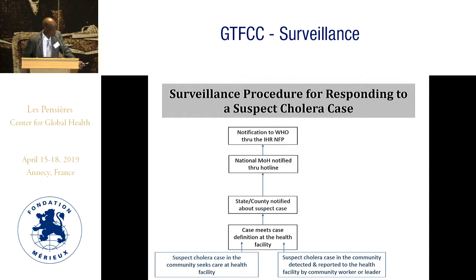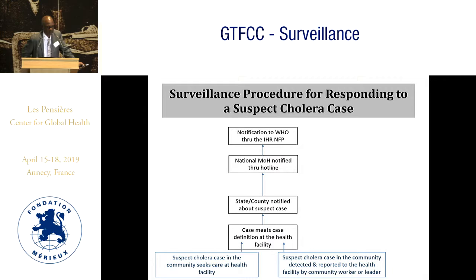There are other reporting pathways not shown for simplicity. Due to gaps in the system, a case can be reported directly from the community to WHO, or from the facility to the national ministry before it reaches the state, depending on accessibility. Some areas are more accessible through the capital than through the state capital, so information may reach the national level first.